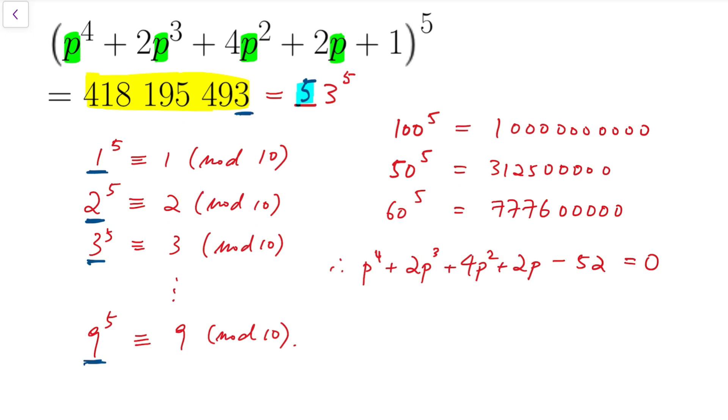If we try to factorize, we can see that if we put 2 into the equation, it holds. So p minus 2 is a factor, and the quotient would be p cubed plus 4p squared plus 12p plus 26 equals 0.